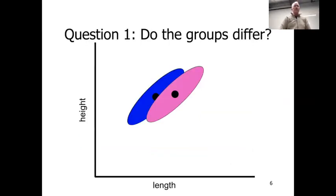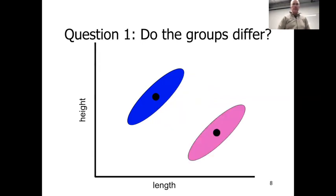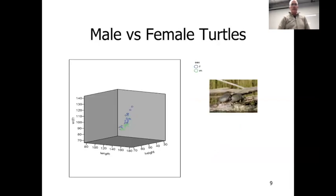So the first thing you ask yourself, just like in ANOVA, there's a statistical way to answer this question. Do the groups differ? So it doesn't look like they differ in this case. They probably differ in this case. And they definitely differ in that case. And here's the situation with male and female turtles. And this is an old-time, really crappy three-dimensional plot on the left there.